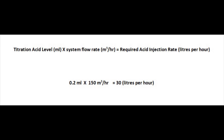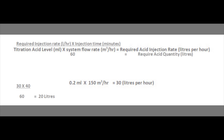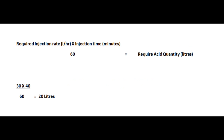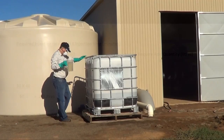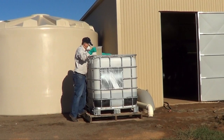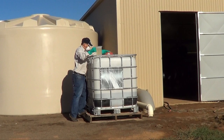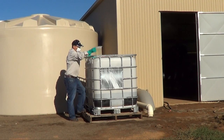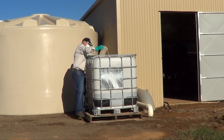Use this formula to calculate the litres of acid required per hour. Use this formula to work out the required quantity of acid. We need 20 litres of acid to be injected over 40 minutes. Add the acid to the quantity of water that will be injected over this time.